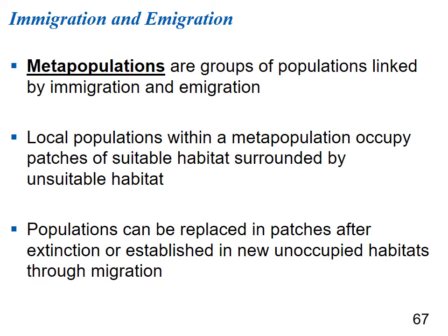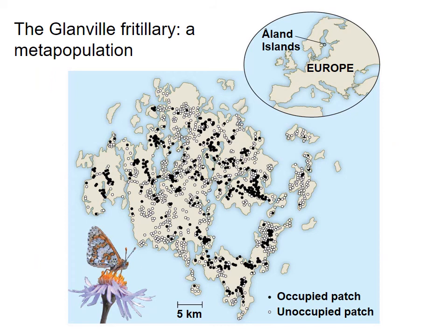A metapopulation is a group of populations linked by immigration and emigration — organisms going in and out. Local populations within a metapopulation occupy patches of suitable habitat surrounded by unsuitable habitat. Populations can be replaced in patches after local extinction, or established in new unoccupied habitat through migration. A fritillary butterfly example shows dark spots as occupied patches and light spots as unoccupied but suitable patches, with organisms able to enter, leave, and interbreed.